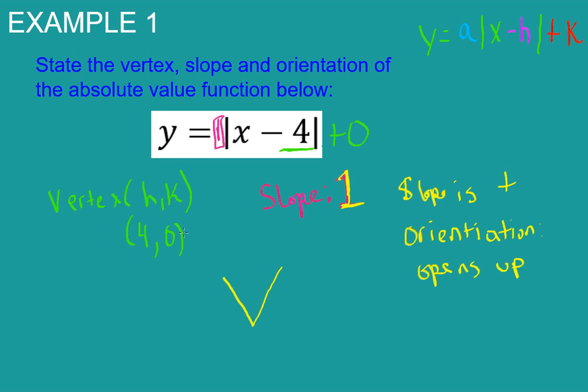So the vertex is four, zero. The slope is one, and its orientation is that it opens up because it is positive.